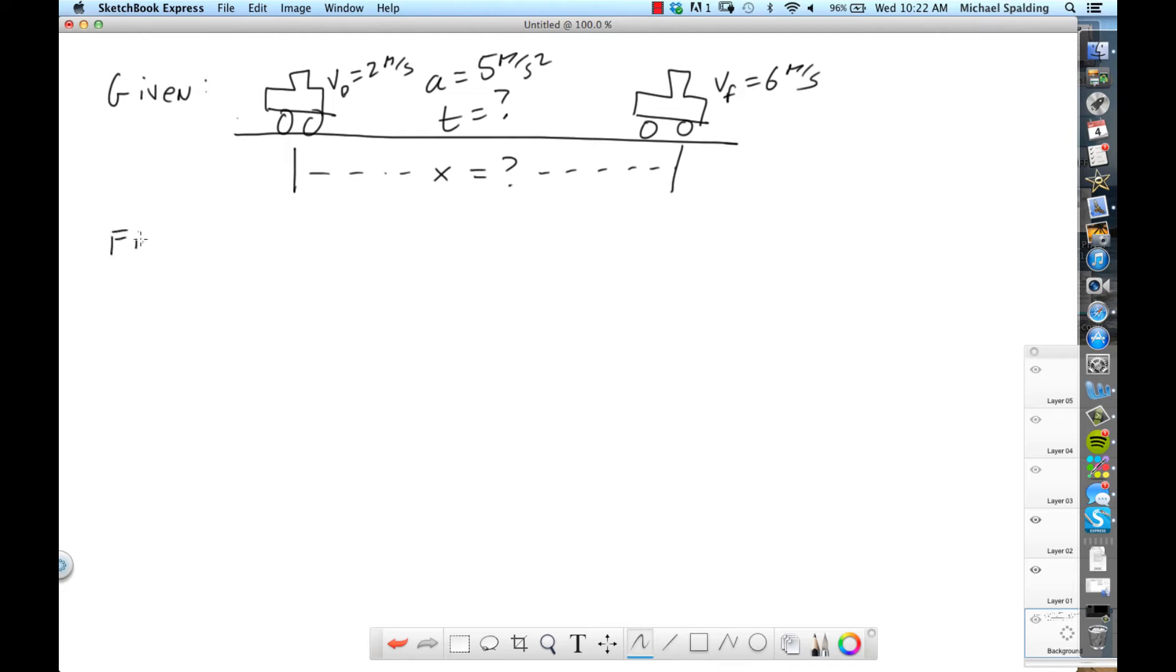Next, you're going to write down find, and you just write down what the problem is asking you to solve for. So let's say the problem wants you to find the displacement and the time. So just write it down. And then the third thing is the solution. So the format goes: given, find, solution. All right?